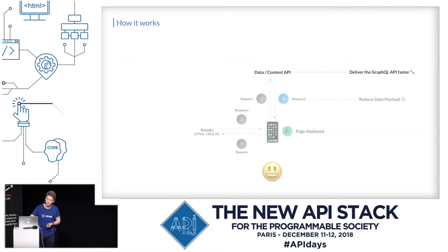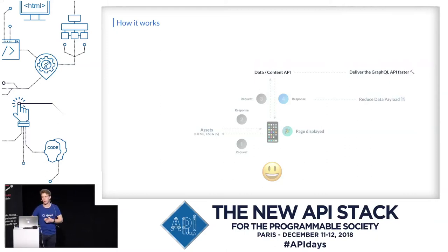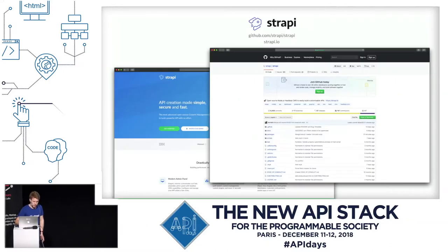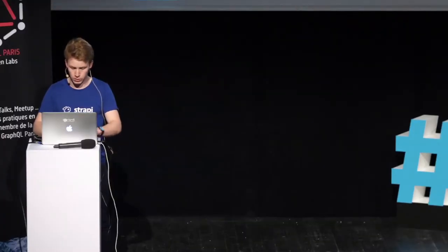We are going to start with the second part of this talk, which is the data content API delivery. Delivery in a web application is not only about displaying the page quickly, but it is also about delivering features quickly to the users. At Strapi, we really want to help developers make this delivery faster. Strapi is open source — published on GitHub — and we are about to reach 10,000 stars, so feel free to give some in the repository. To explain how we help developers save time, we are going to show you with a quick demo.